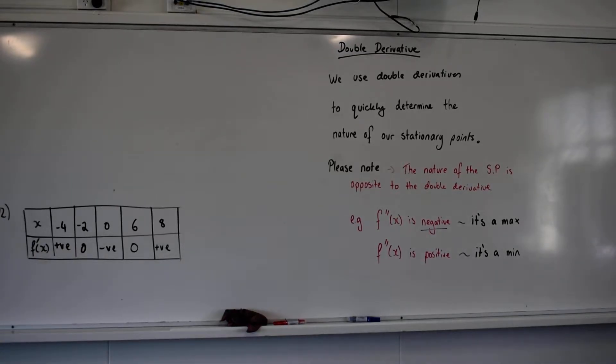Alright, just to summarize this last one. I've derived it, it's obviously a quadratic. I've let it equal zero, use null factor law. My two stationary points are the two times that equals zero, is when x equals six and x equals negative two.